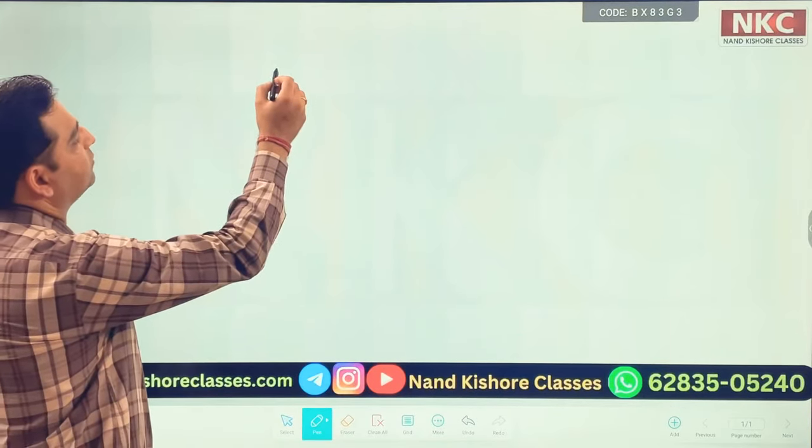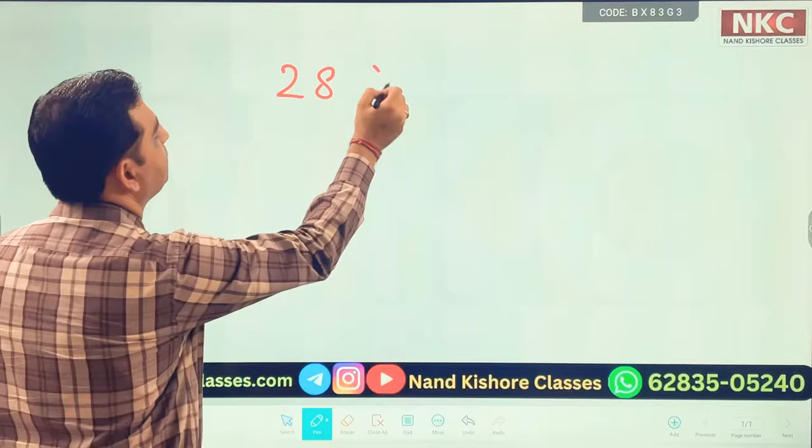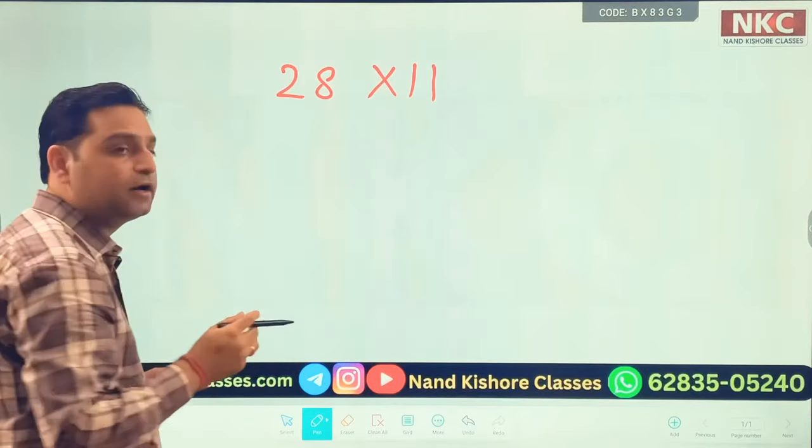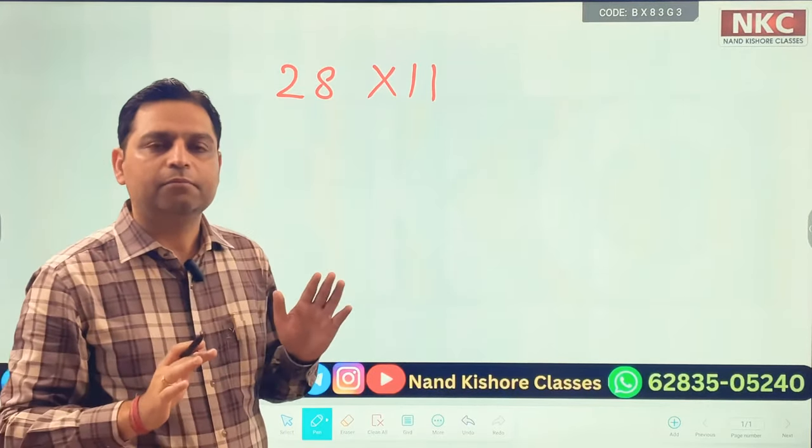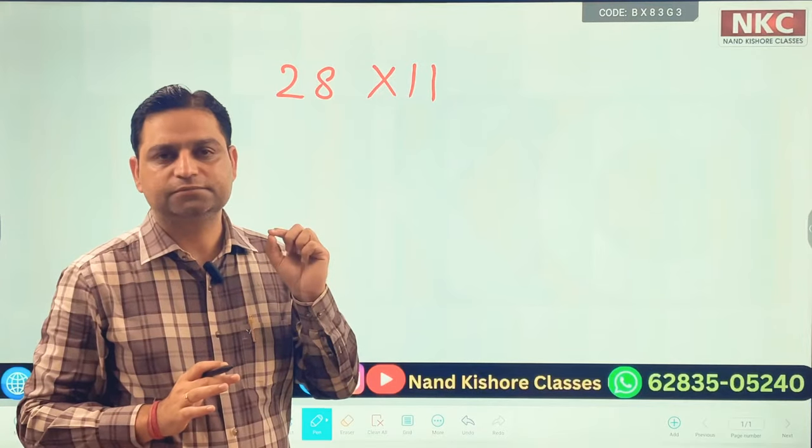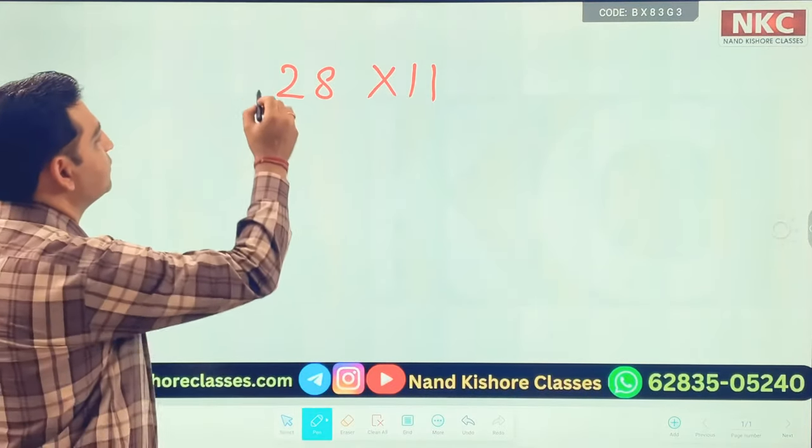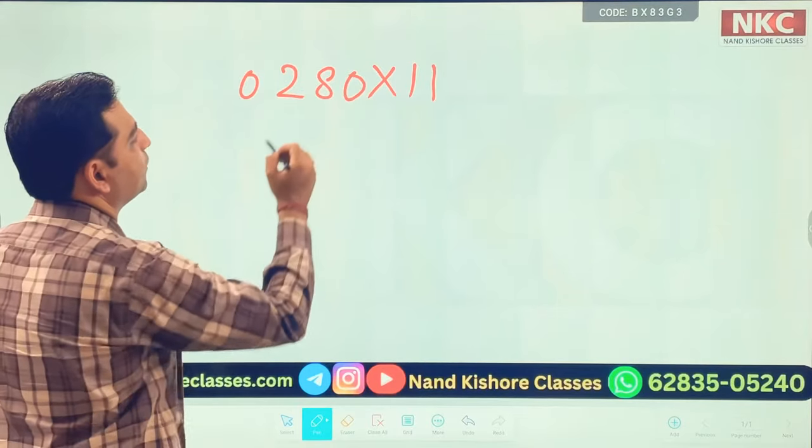For example, sometimes what will happen, let's suppose you get 28 multiply by 11. I am using the same trick but there is one change here. What is the change? Let us try to understand.